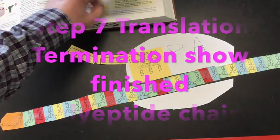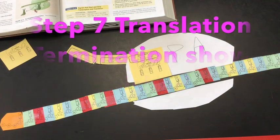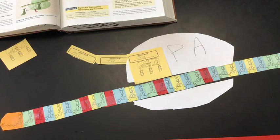The next step would be termination. You can just show termination would be the ribosome leaving and you've got a finished polypeptide chain. Hopefully that was helpful and good luck.